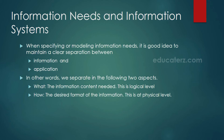When specifying or modeling information needs, it is a good idea to maintain a clear separation between information and application — the application to access the data or process the data. In other words, we separate the following two aspects. First: what — the information content needed. This is the logical level. Second: how — the desired format of the information. This is at the physical level. For example, what data needs to be stored, and how the information is presented to the user.